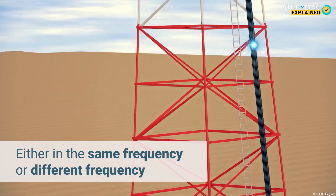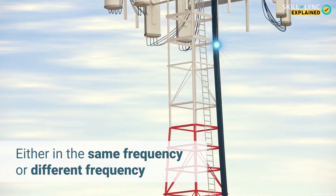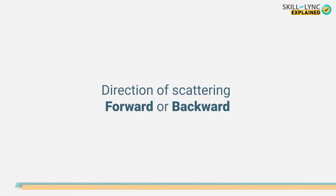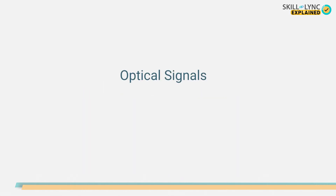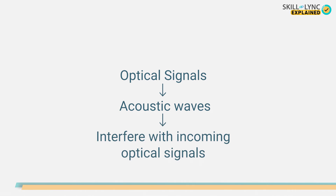Now coming to non-linear scattering, the optical power is transferred from one mode to another, either in the same frequency or a different frequency. The direction of scattering can be forward or backward. Non-linear scattering is further divided into stimulated Brillouin scattering and stimulated Raman scattering. In stimulated Brillouin scattering, the strong optical signals inside the fiber are converted into acoustic signals. These signals travel backward and interfere with the incoming optical signals, causing a loss in signal strength.